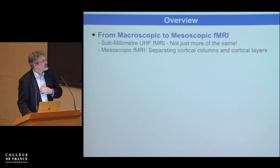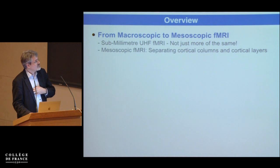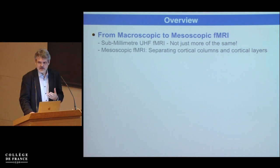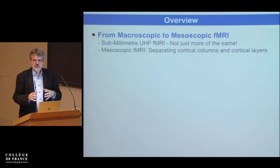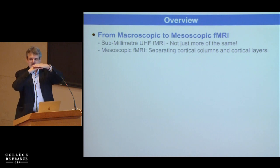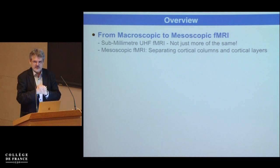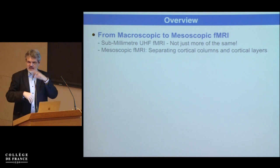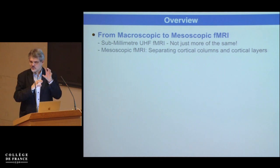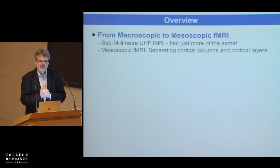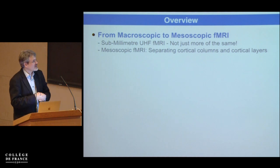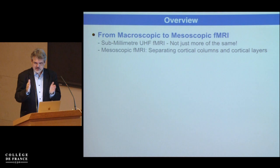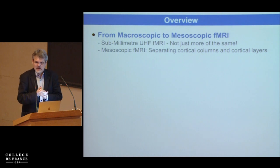I will use the term 'mesoscopic fMRI' frequently. This means pushing the resolution of fMRI away from areas and networks down to things within the cortex — for example, resolving the layers of the cortex. Not as sharply as in animal research with six layers and sub-layers, but in roughly three compartments. We also look with sub-millimeter imaging at what's happening inside brain areas to understand coding principles.